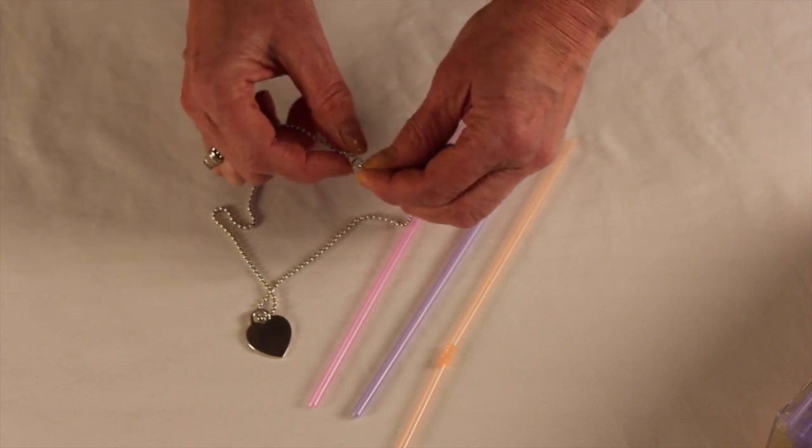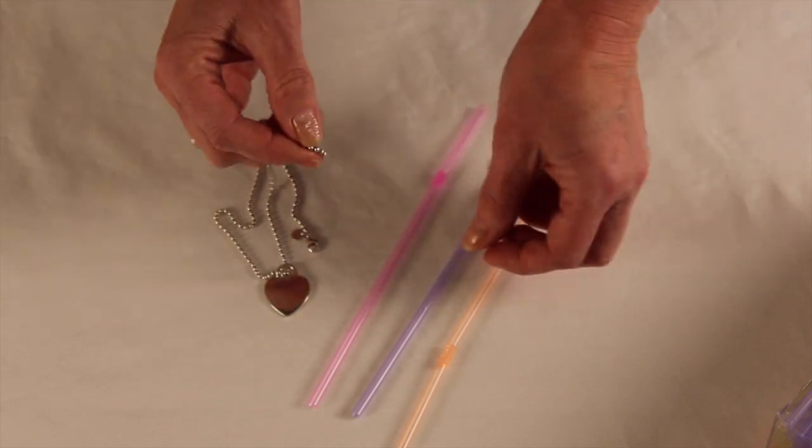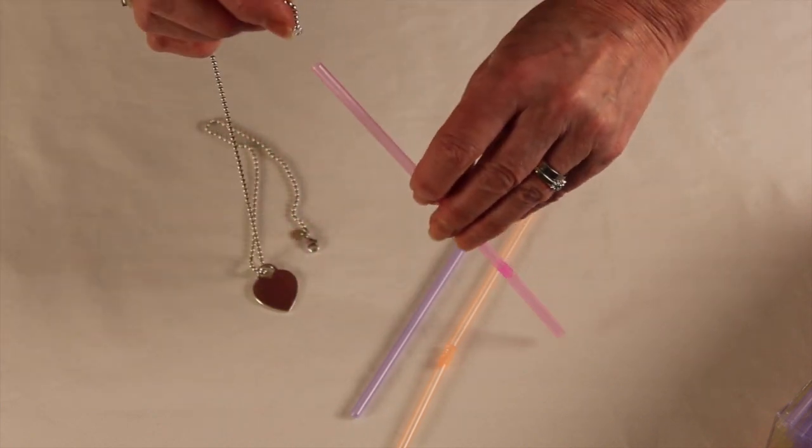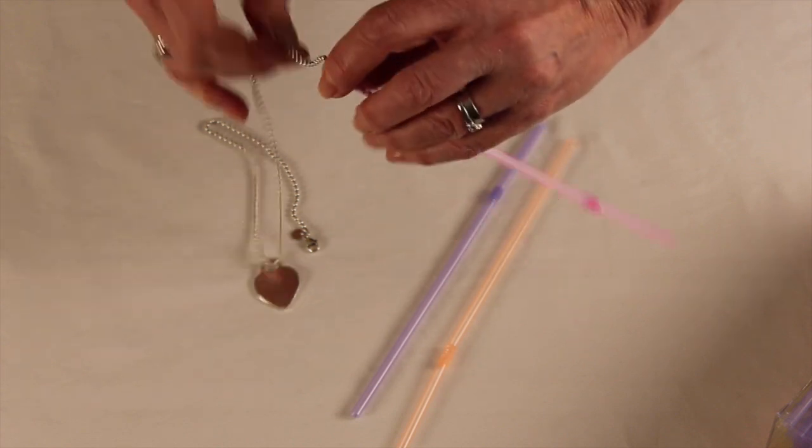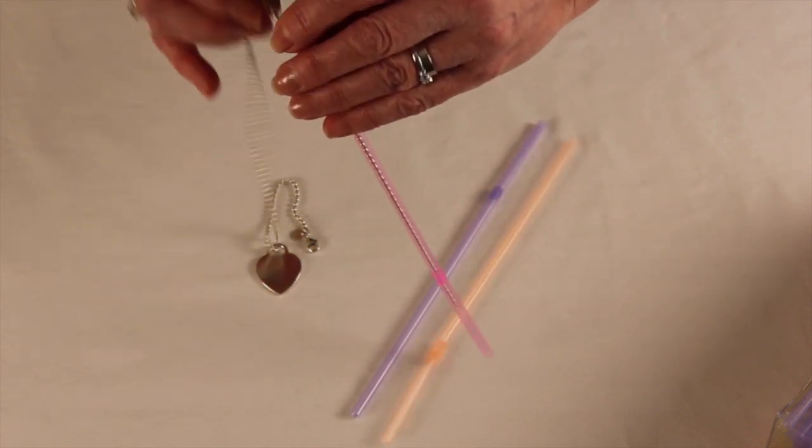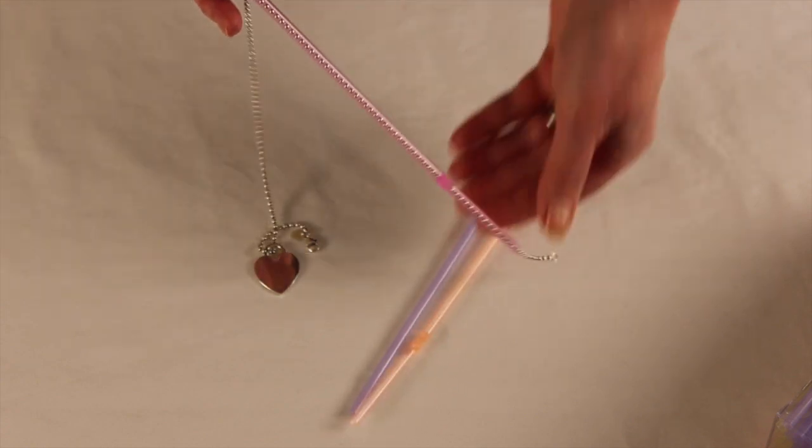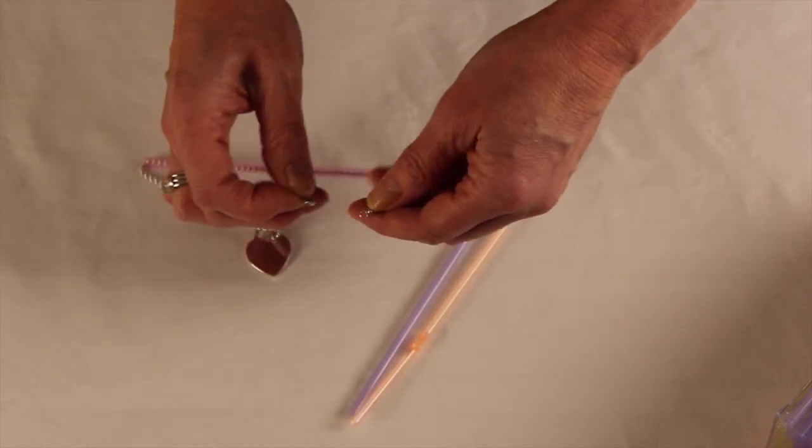So to begin, undo the clasp on your chain and feed the one end down through the straw. This chain fits through this straw but like I said you can get bigger straws. They are available.